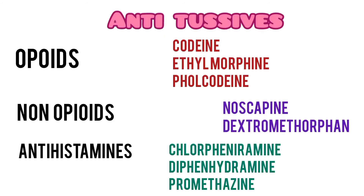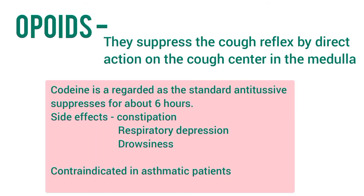Antitussives are used for dry cough and are also called cough suppressants. They are classified into opioids, non-opioids, and antihistamines. Opioids suppress the cough reflex by direct action on the cough center. Examples include codeine, ethylmorphine, and folcodeine. Codeine is regarded as the standard antitussive and suppresses cough for about 6 hours.